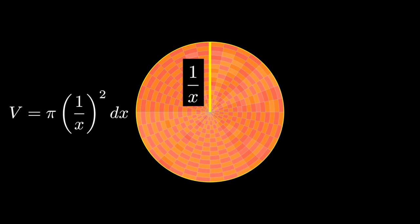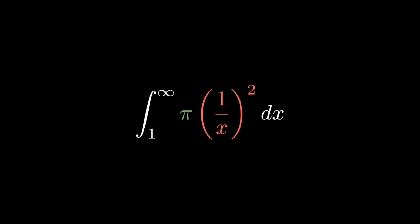So to find the volume of the whole cylinder, we need to sum up all the disks from 1 to infinity. So that's simply an integral. So we take the integral from 1 to infinity of π times (1/x²) dx.